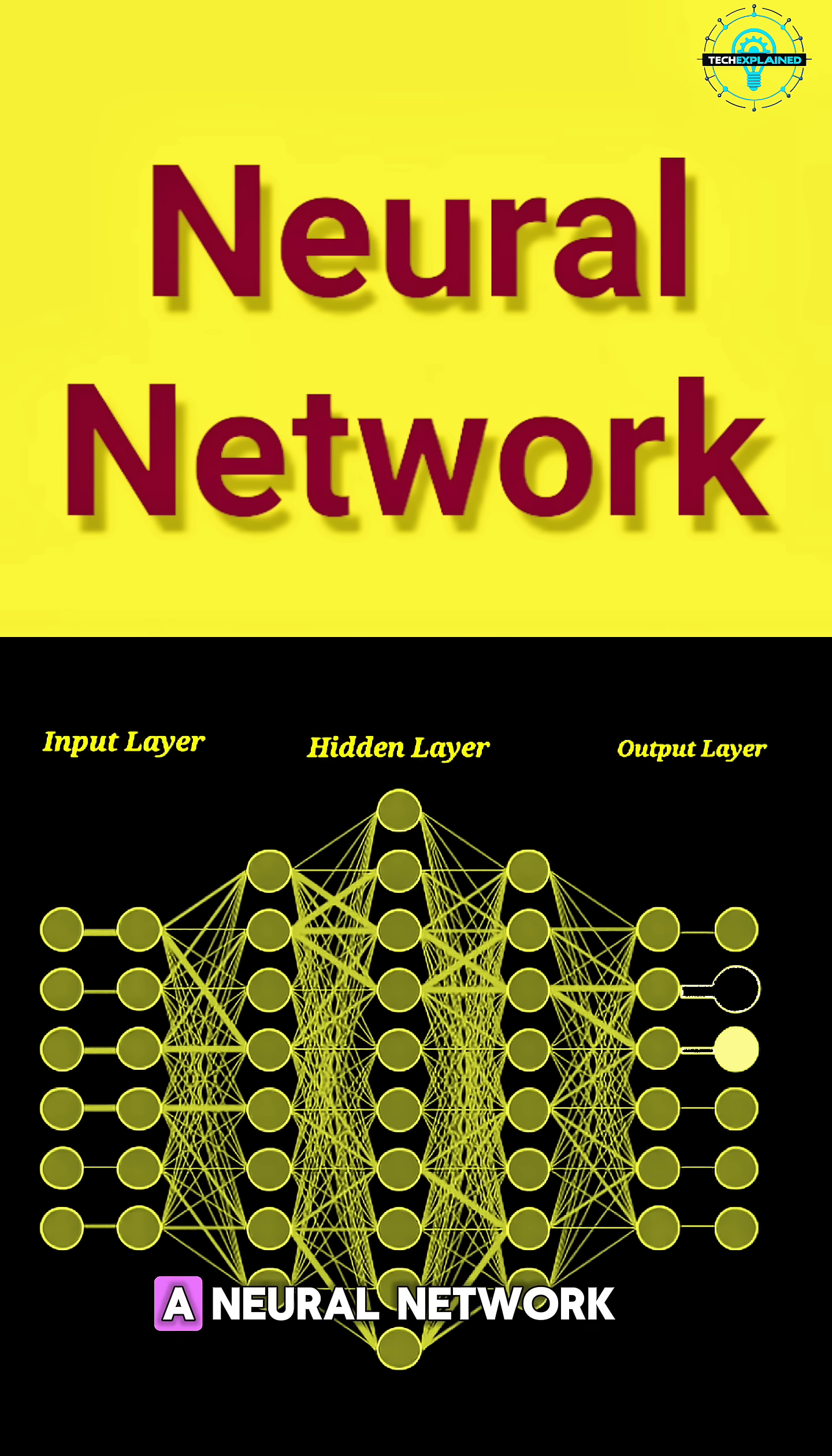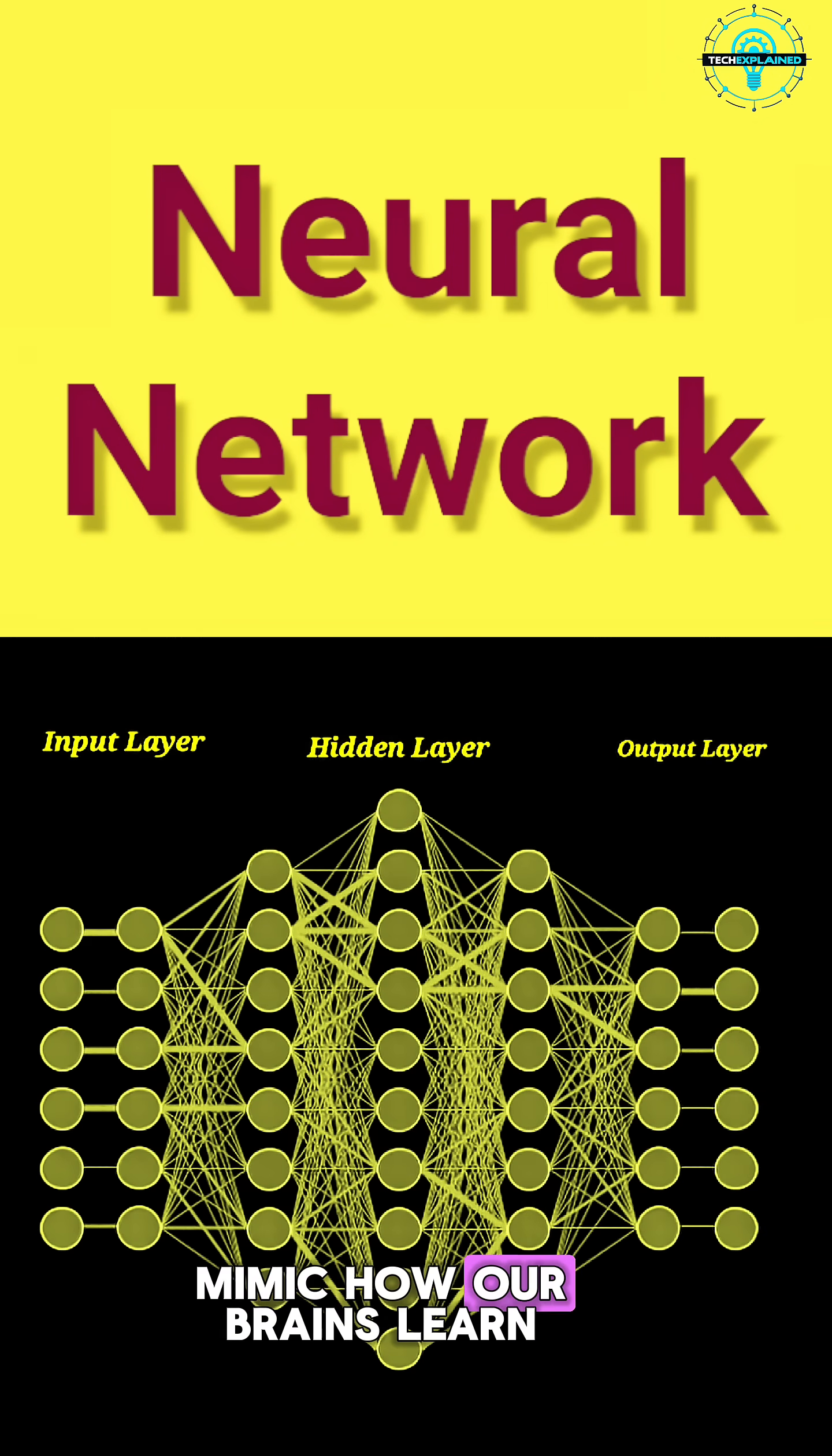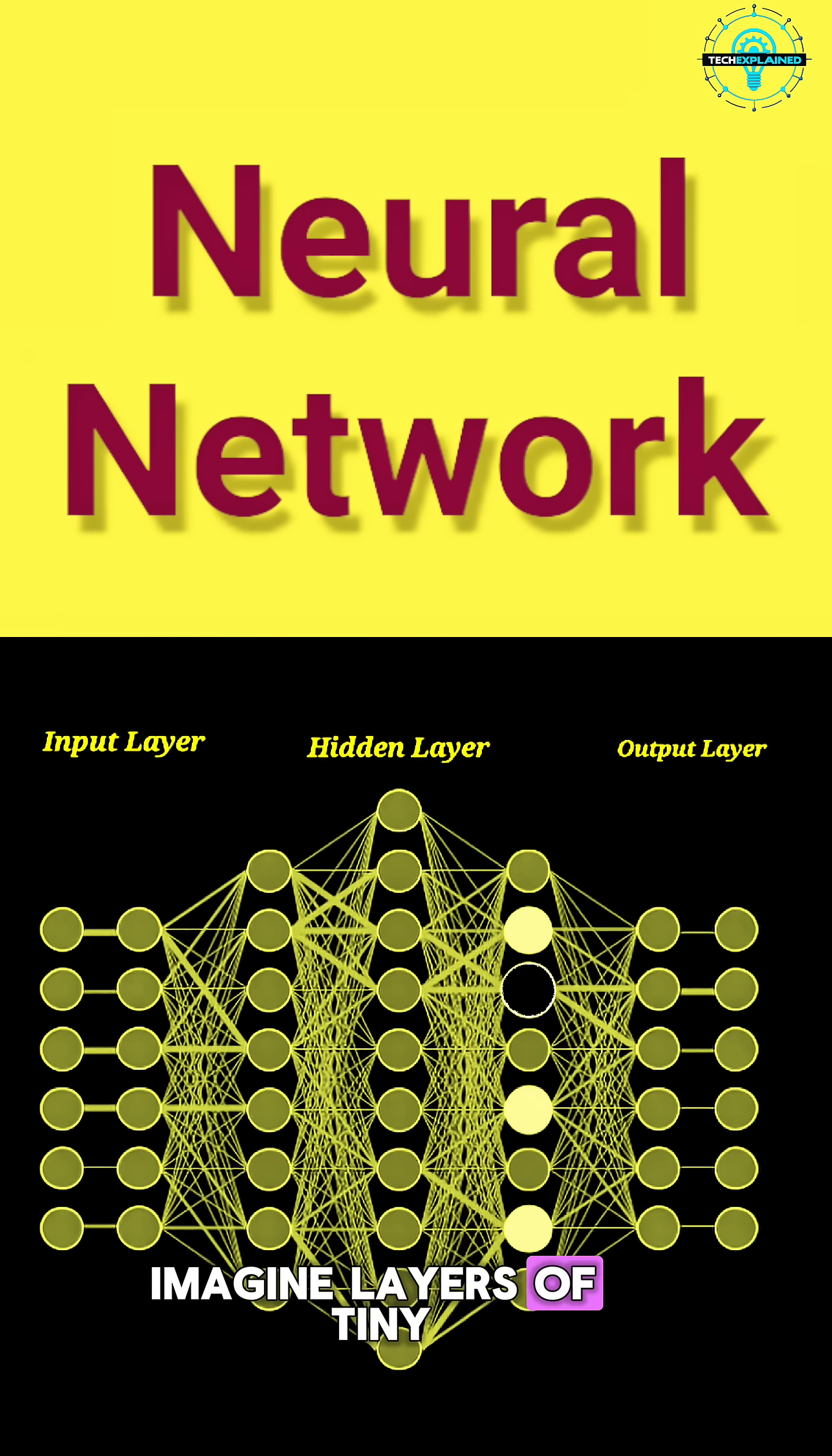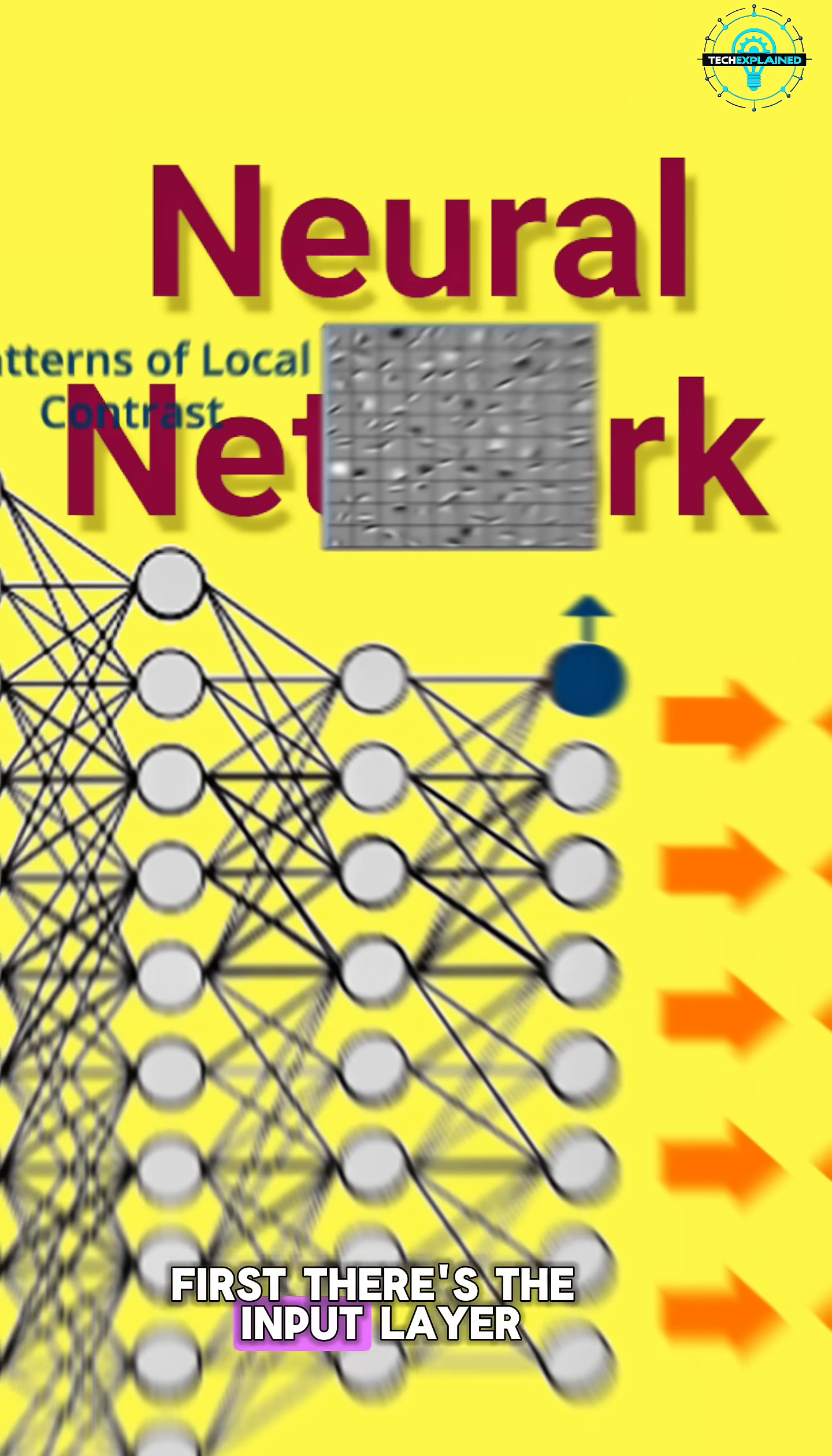What exactly is a neural network? At its core, it's a system designed to mimic how our brains learn. Imagine layers of tiny digital neurons all working together. First, there's the input layer.